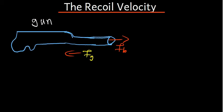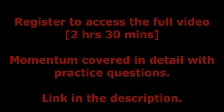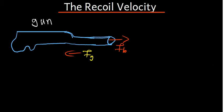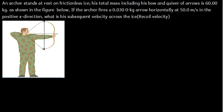Now let us talk about inelastic collision and the recoil velocity. An archer stands at rest on frictionless ice. His total mass including bow and quiver of arrows is 60.00 kg. If the archer fires a 0.0300 kg arrow horizontally at 85 m/s in the positive X direction, what is his subsequent recoil velocity across the ice?